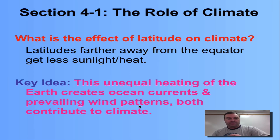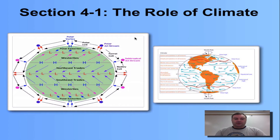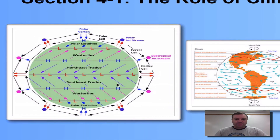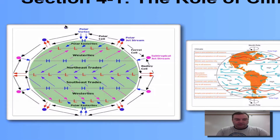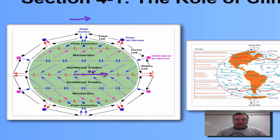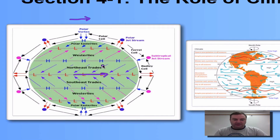Here we've got the wind patterns. You'll notice that the earth is actually rotating in this direction. As the earth is moving this way, the wind down here on the equator is moving in the opposite direction. So what we have is northeast trade winds around the equator, and if you go below the equator they're southeast.